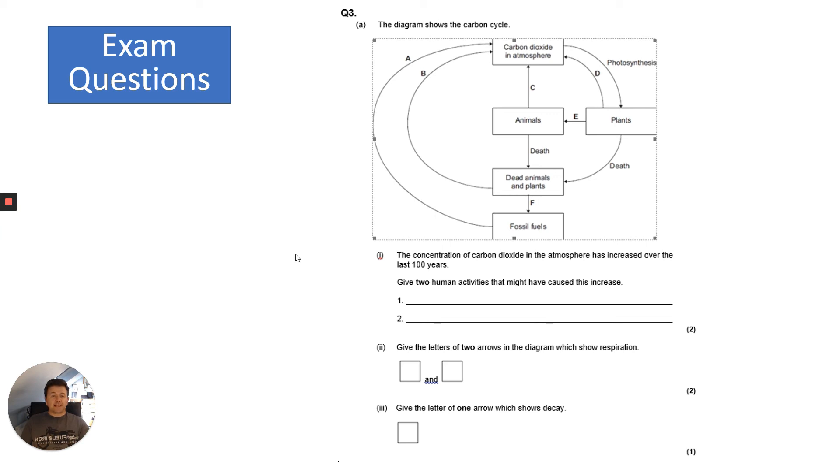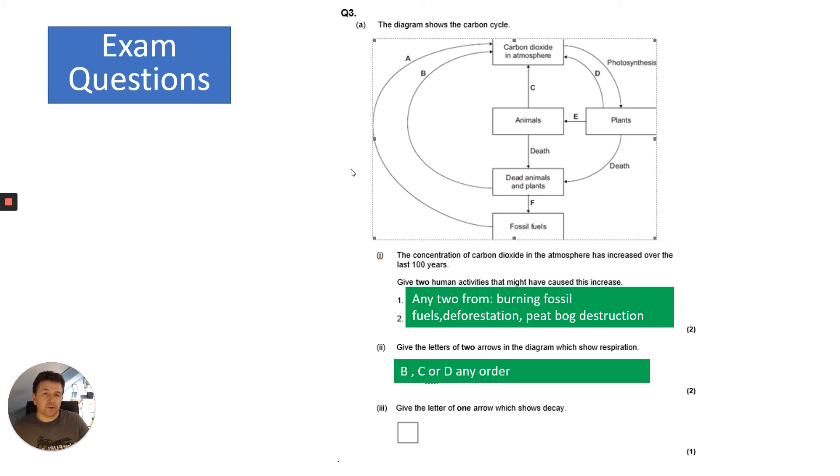Two human activities that might have caused this increase - well, there are many. You could have any two from things like burning fossil fuels, deforestation, or peat bog destruction. Remember my other video on the human impacts of the environment where we talk about those three things in detail. Then it says give the letters of two arrows which show respiration. Well, respiration is releasing carbon dioxide into the atmosphere, so it could be B, C, or D.